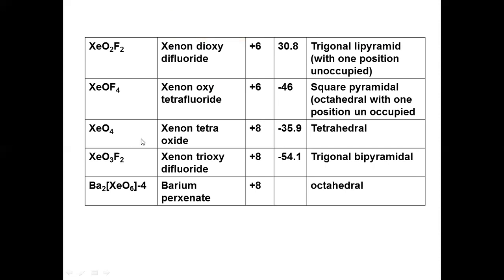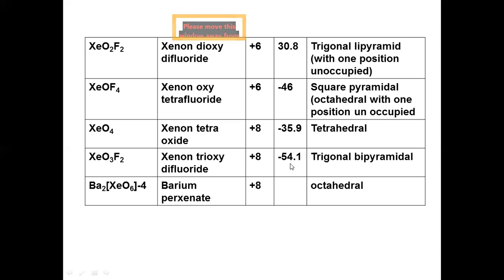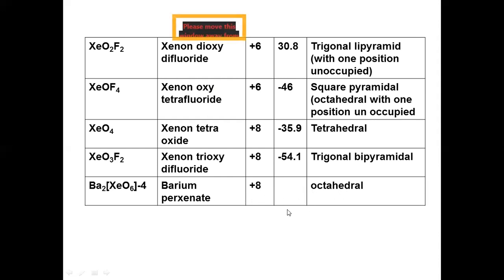Xenon tetraoxide (XeO₄): oxidation state is plus eight, melting point is negative 35.9°C, and structure is tetrahedral. Xenon trioxide difluoride (XeO₃F₂): oxidation state is plus eight, melting point is negative 54.1°C, and structure is trigonal bipyramidal. Barium perxenate: oxidation state is plus eight, and structure is octahedral.